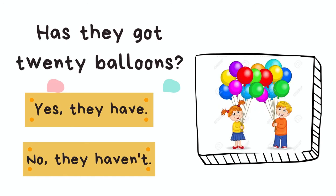The second example. Has they got twenty balloons? — Let's count together. One, two, three, four, five, six, seven, eight, nine, ten, eleven, twelve, thirteen, fourteen, fifteen, sixteen. Oh no, no, they haven't.